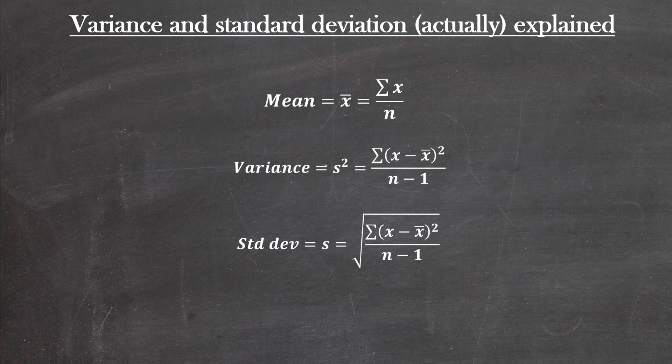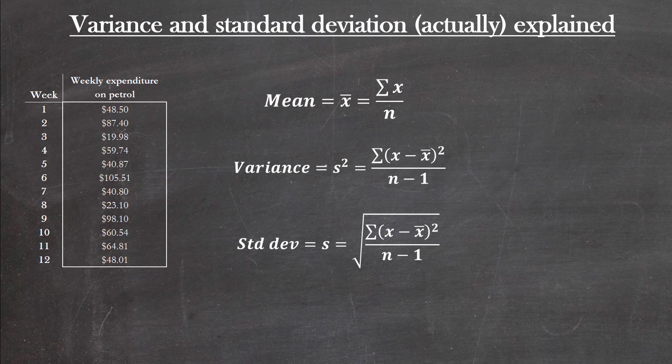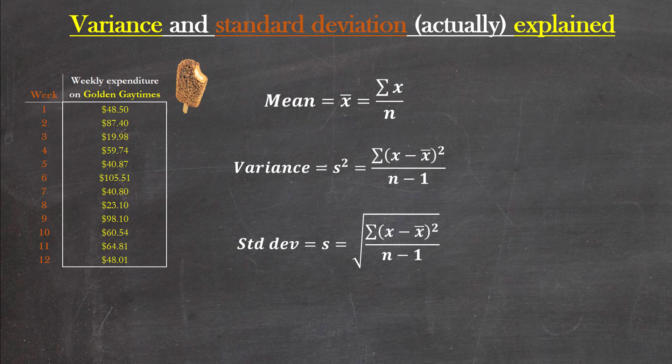I've got the formulas here - the mean, the variance, and the standard deviation - just so we get a sense of how they all work. Let's use a dataset I've stolen off the internet: weekly expenditure on petrol over 12 weeks, which is just about the most boring dataset I can think of, so I'm going to change that to weekly expenditure on golden gay times.